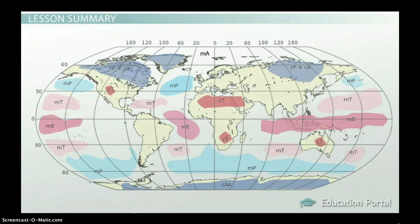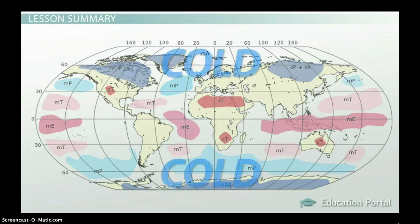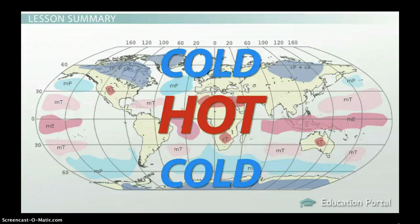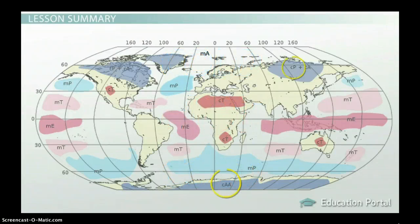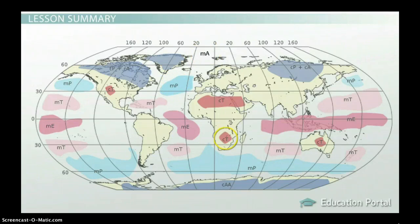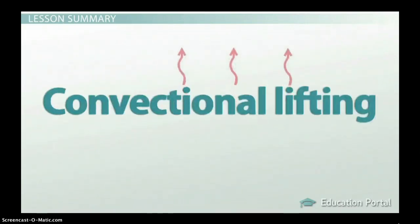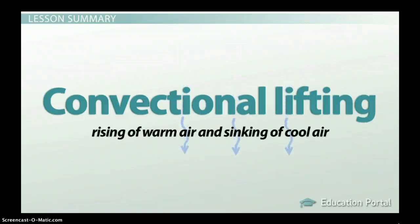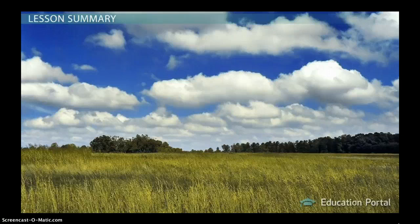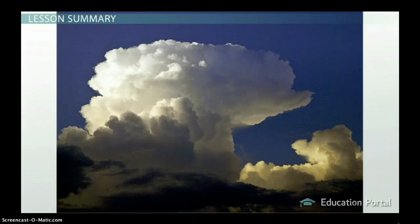Similarly, Arctic and polar air masses are cold, and tropical air masses are hot. Combined, you can have dry, cool air (continental Arctic or continental polar), moist, cool air (maritime Arctic or maritime polar), dry, warm air (continental tropical), or moist, warm air (maritime tropical). Air masses are not stationary, and their movement affects weather. When air masses experience convectional lifting — the rising of warm air and sinking of cool air — we get cumulus clouds. If they grow large enough, cumulus clouds can turn into thunderstorm clouds and produce intense storms.